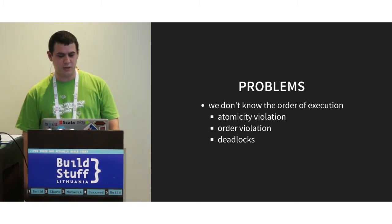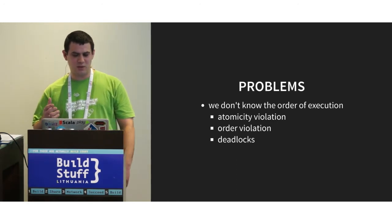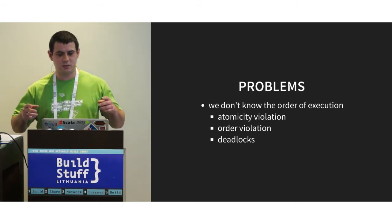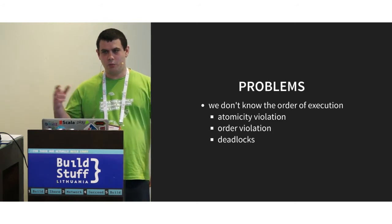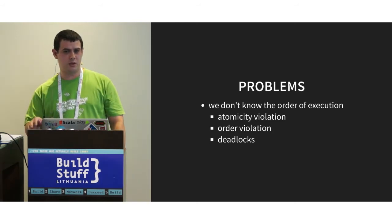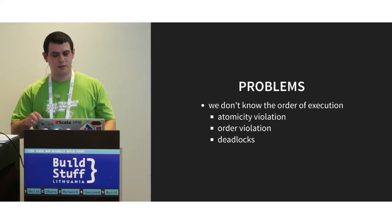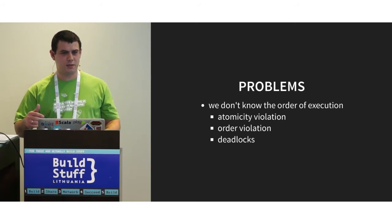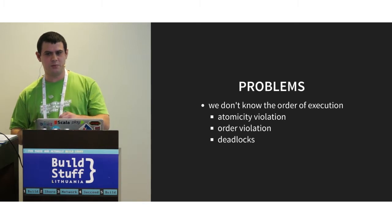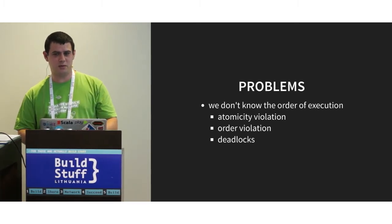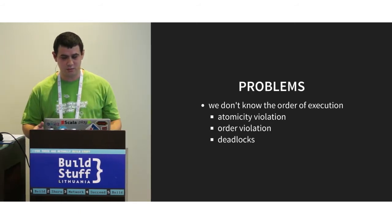I think there are three kinds of problems we can spot when writing concurrent code. The first is atomicity violation. Imagine two threads operating on a shared object. One thread checks whether the object is null, and if it's not, it tries to invoke a method on it. But in the meantime it gets halted, a second thread sets the object to null, and when the first thread resumes and calls the method, it gets a null pointer error.